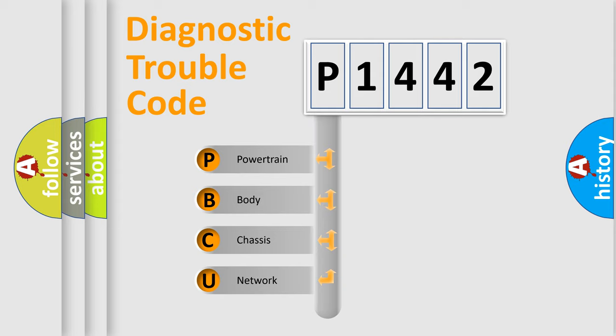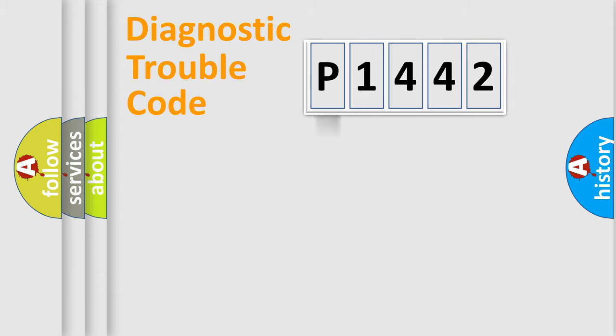We divide the electric system of automobile into the four basic units: Powertrain, body, chassis, and network. This distribution is defined in the first character code.